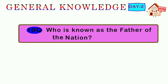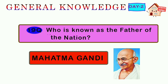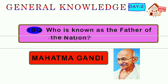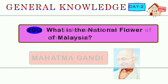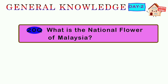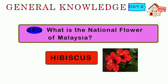Nineteenth question: who is known as the Father of the Nation? Answer: Mahatma Gandhi. Twentieth question: what is the national flower of Malaysia? Answer: Hibiscus.